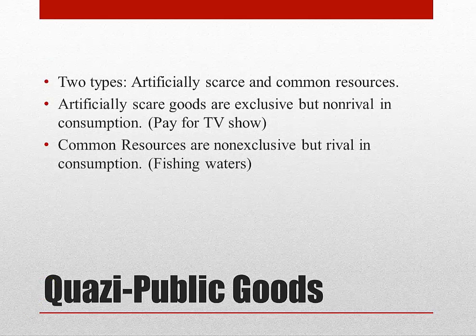There are also quasi-public goods. The two types are artificially scarce and common resources. Both of these are neither pure public nor pure private. Artificially scarce goods are exclusive but non-rival consumption — like a pay-for TV show. You have to pay to use it, but if you watch it, it doesn't prevent someone else from also watching it. Common resources are non-exclusive but rival consumption. Fishing waters are an example: you can't prevent someone from fishing in the ocean, but constant fishing depletes the ocean of fish, which hurts other people when they try to go fishing.